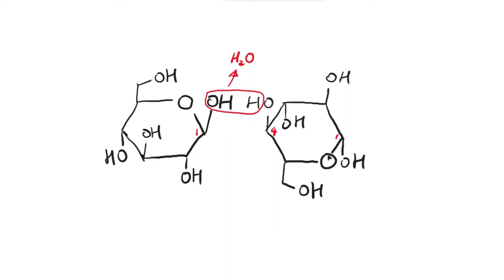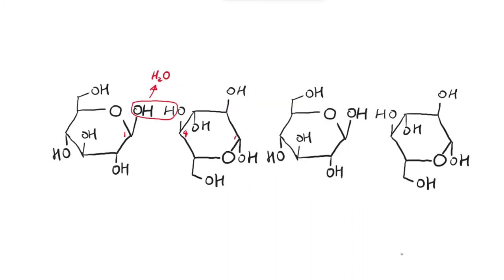On the next beta-glucose, the hydroxyl group on carbon number one is below the ring, and because the next beta-glucose is also positioned nearby, the hydroxyl groups are close to each other and can join together again. Imagine four of them chained: carbon number four's hydroxyl group is close by, so it can react again, and the next beta-glucose on the right is again inverted upside down. The hydroxyl groups are close to each other, so a condensation reaction occurs, forming water molecules.